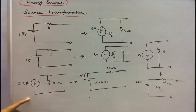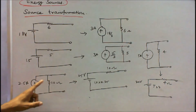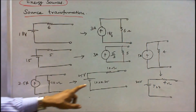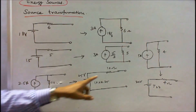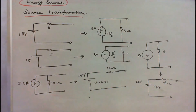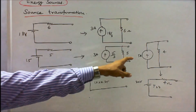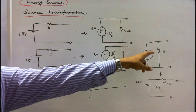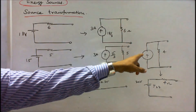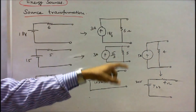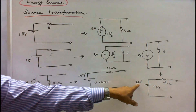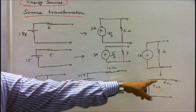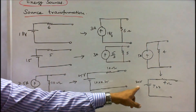For the current-to-voltage conversion: a 0.25 ampere current source with a 10-ohm resistor in parallel gives 10 times 0.25 equals 2.5 volts, and the 10-ohm resistor is connected in series with the voltage source. In another example, a current source with 5 ohms and 4 ohms in parallel: 5 times 4 equals 20, giving 20 volts with the 4-ohm resistor connected in series.